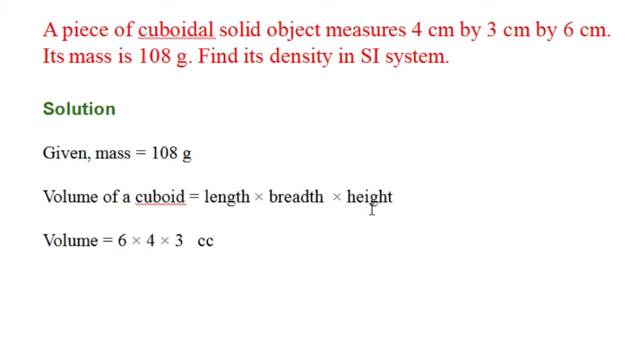If you put the values, 6 multiplied by 4 multiplied by 3, definitely cc, and it is 72 cc. We have written here 72. So, density equals mass divided by volume. If you put the values, mass is 108, volume is 72. If you divide, you get 1.5 gram per cc.